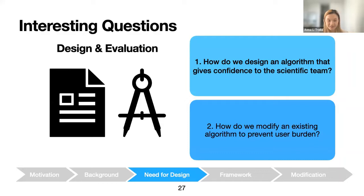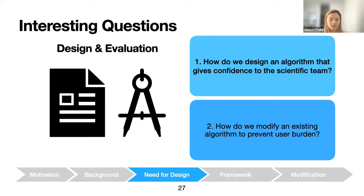Interesting questions arose from designing the Oralytics algorithm. The first question: how do we design an algorithm that gives confidence to the scientific team — what properties make the team confident in deployment? The second question: sometimes we have a well-studied algorithm that is simplified for real-world use. How do we modify such algorithms to still generalize and obtain desired properties? For example, in mobile health we care about preventing user burden, but some existing algorithms don't account for how the current intervention impacts responsiveness to future messages.